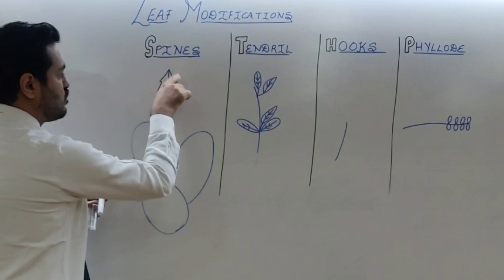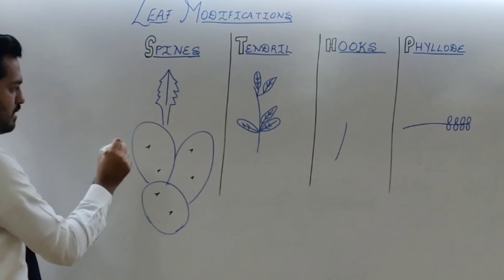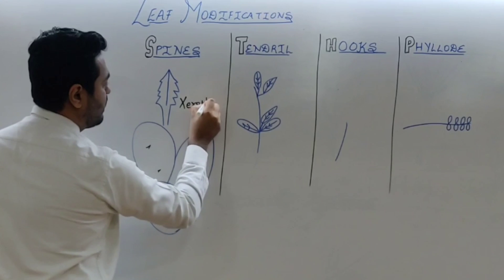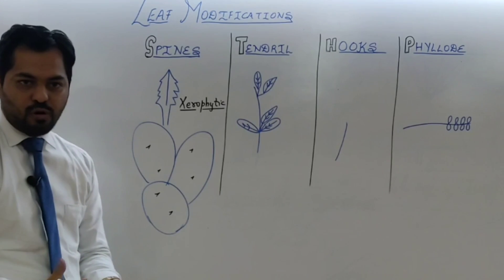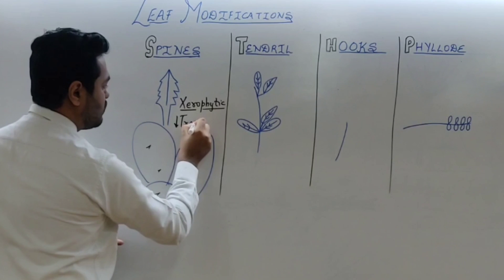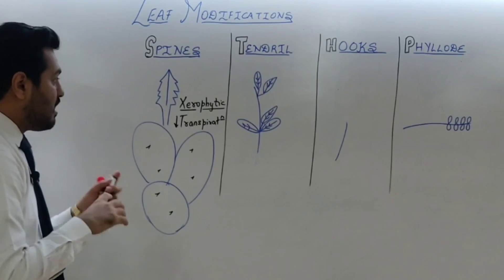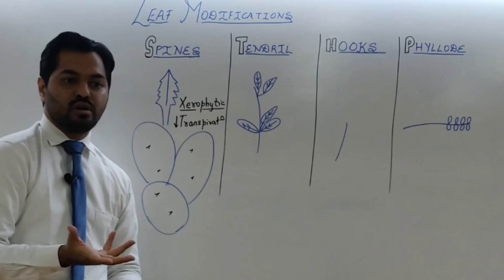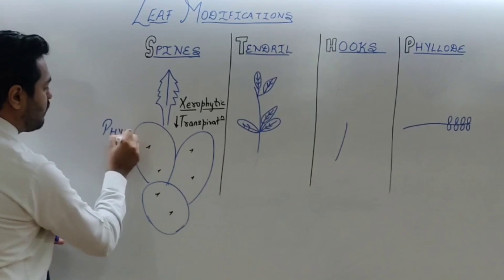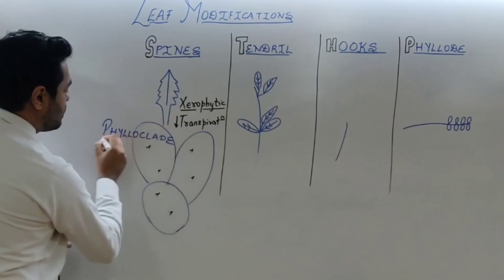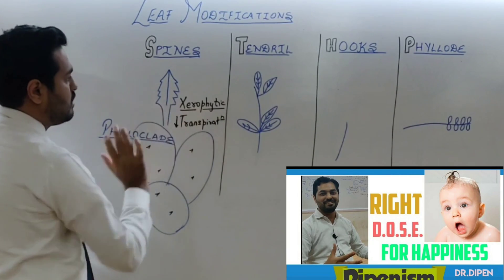When leaf is converted into sharp and pointed leaf spines, the leaf spines are mainly a xerophytic adaptation. Xerophytic means plants in dry regions where there is scarcity of water. So to reduce the level of transpiration, the leaf is modified into sharp and pointed structures known as spines. If the leaf is spiny, then photosynthesis is performed by the stem — this is the stem modification called phylloclad. The phylloclad is where the stem becomes green, flat, and performs photosynthesis because the leaf has been converted into spines.